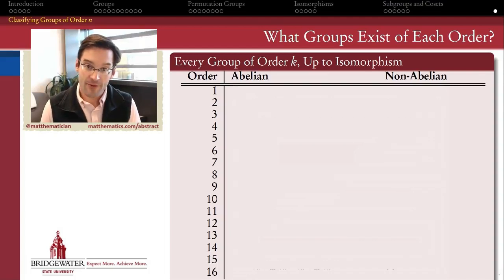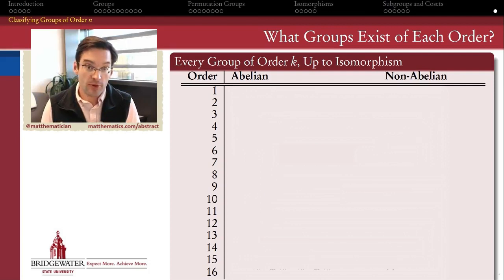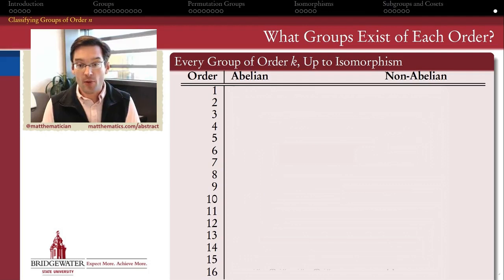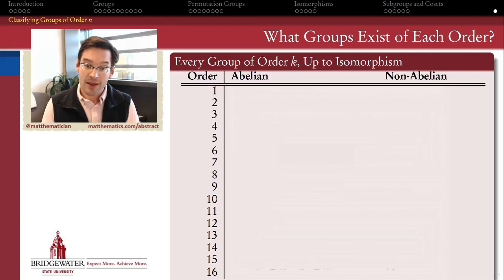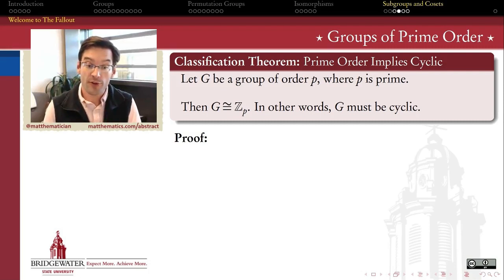One of the most ambitious goals we have for this semester is to be able to answer the question: what all groups are out there? What kinds of group structures are we even able to make out of a finite set of objects? We just gained something really powerful as a consequence of Lagrange's theorem. If I'm going to ask what groups of a certain order exist, we've seen now that if the order is a prime number, then every single group whose order is a prime number is a cyclic group.